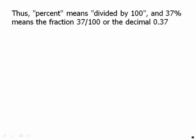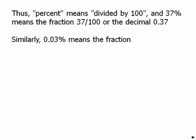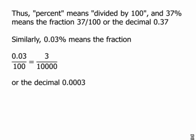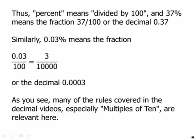Thirty-seven percent means the fraction thirty-seven over one hundred, or the decimal 0.37. Similarly, 0.03 percent means the fraction 0.03 over one hundred, which of course is three over ten thousand, or the decimal 0.0003. As you see, many of the rules covered in the decimal videos, especially multiples of ten, are relevant here.